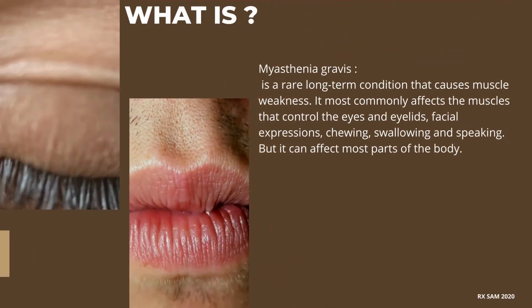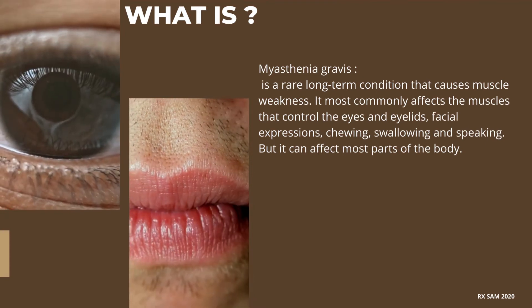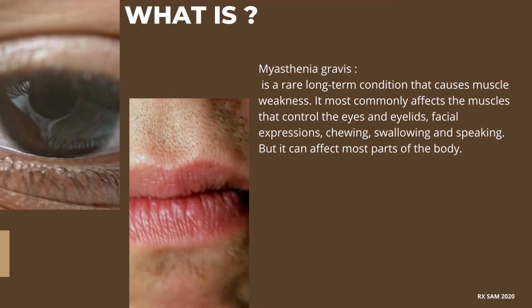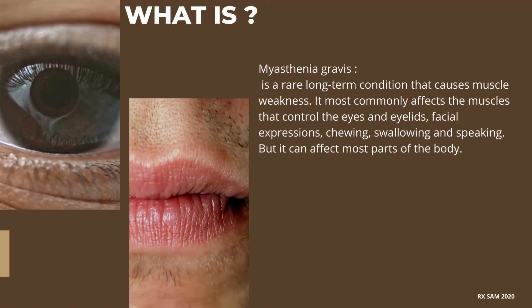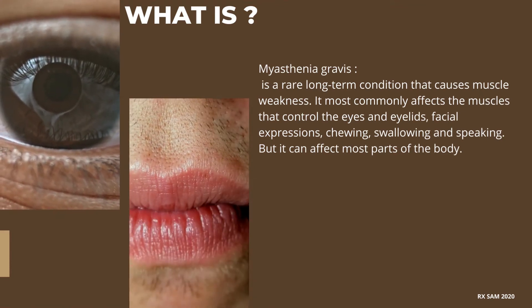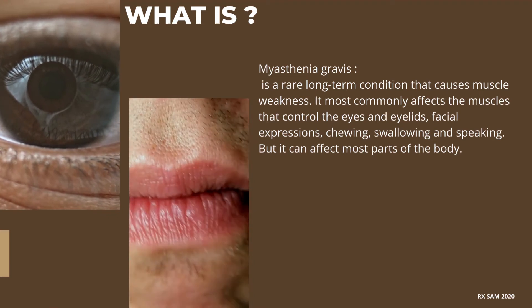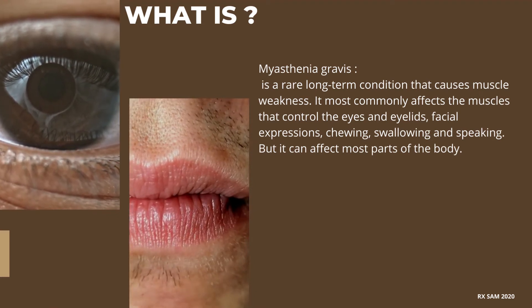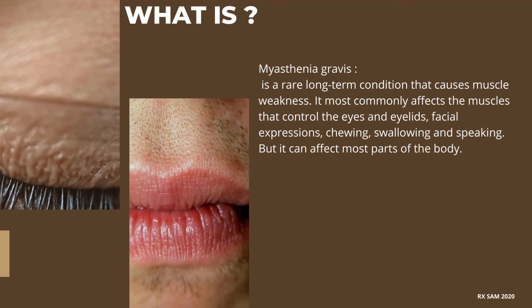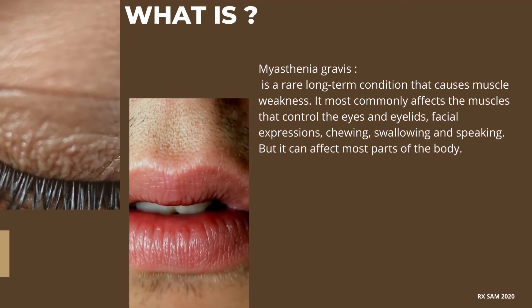Myasthenia gravis is a rare long-term condition that causes muscle weakness. It most commonly affects the muscles that control the eyes and eyelids, facial expressions, chewing, swallowing, and speaking, but it can affect most parts of the body.